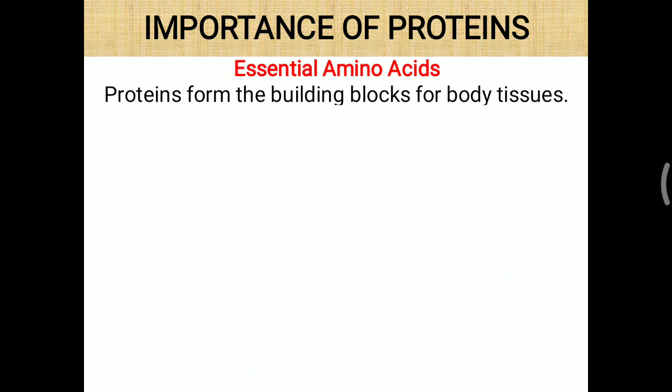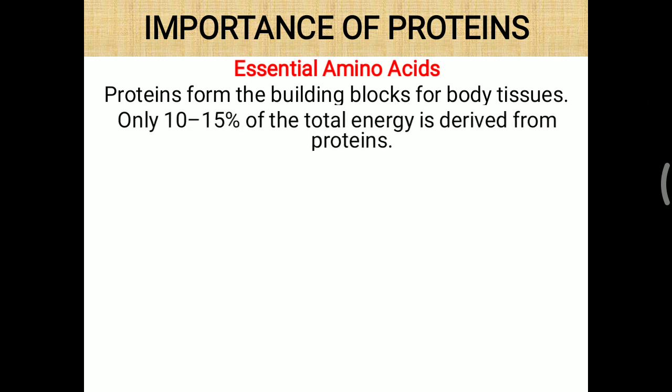Protein forms the building block of body tissue. Our muscle mass is basically made up of protein, and protein is made up of amino acids. Only 10 to 20 percent of the total energy is derived from protein. Our body uses amino acids and protein for making body tissue, not for energy purposes. Only a small amount of energy is derived from protein.